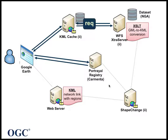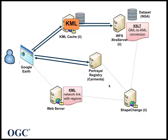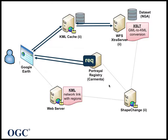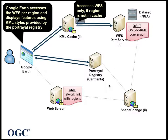This network link is then accessed by the KML client Google Earth and is shown in the Places section. Once regions become visible as the user changes their view, Google Earth follows the links and accesses the KML cache. If the region has not been accessed recently, the region is not in the cache and the data is accessed from the WFS, stored in the cache, and returned to Google Earth. The KML placemarks are displayed and for this the KML styles, which are referenced from the portrayal rules, are accessed and used.